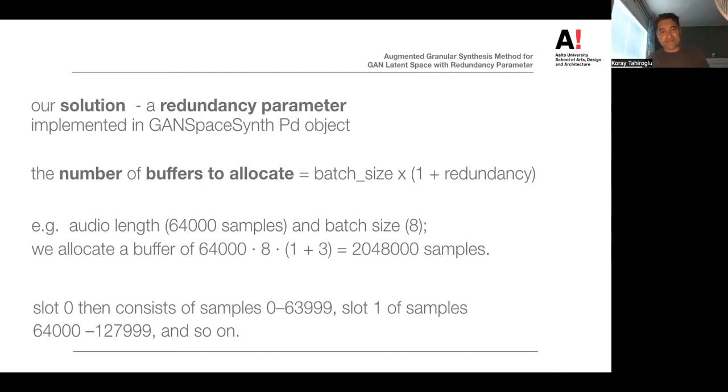For example, giving a redundancy of 3 and GANSpaceSynth default for audio length and 64,000 samples, and batch size 8, we allocate a buffer of 2,048,000 samples. In practice, we use a single large buffer divided into a number of different slots.